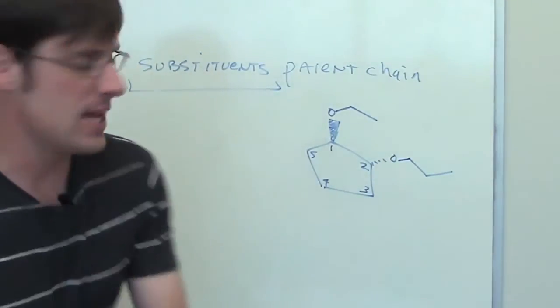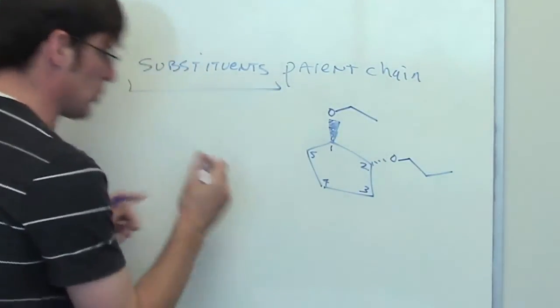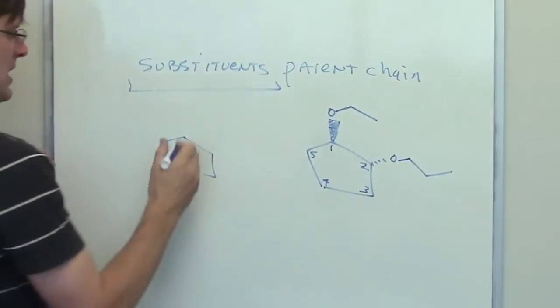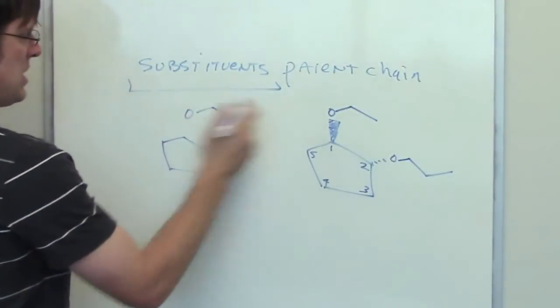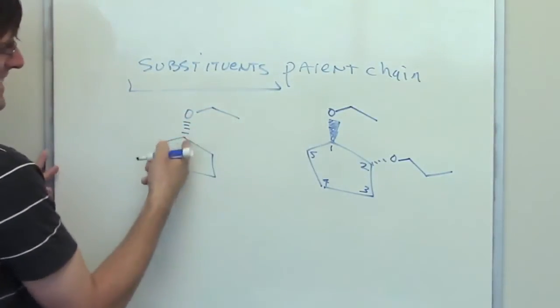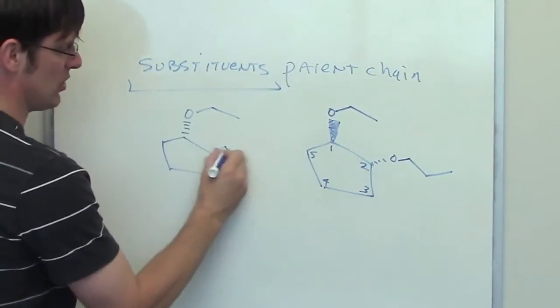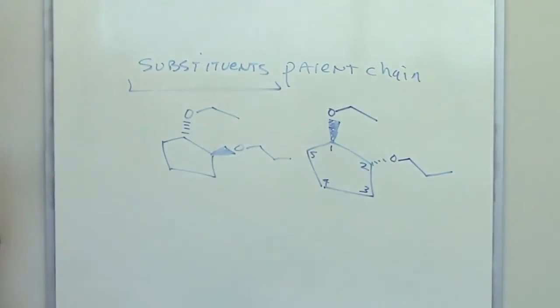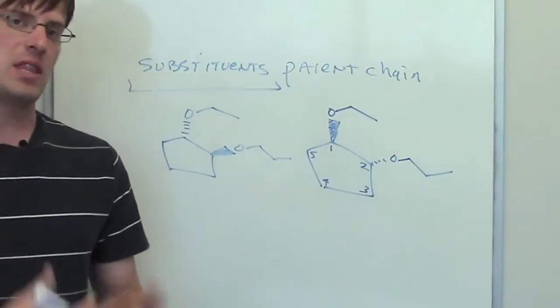Now, one thing I want to point out is this. You could draw the opposite isomer. That is, the ethoxy group with a dashie and the propoxy group with a wedgie. Yes, I did say wedgie. One up and one down like that.